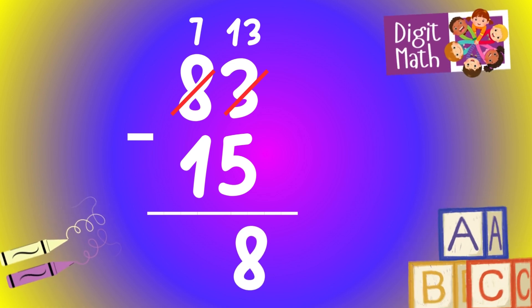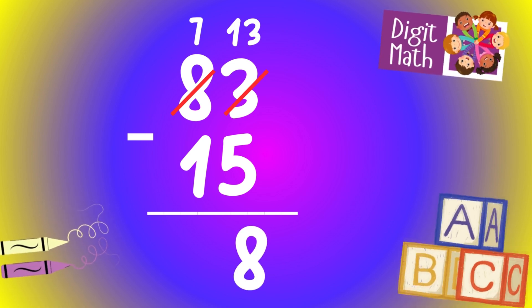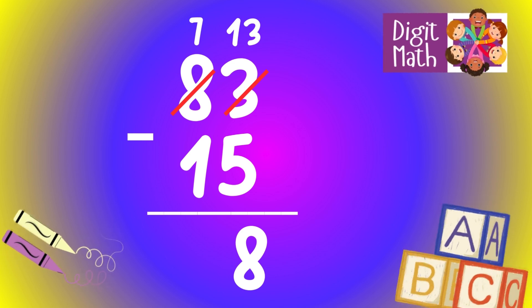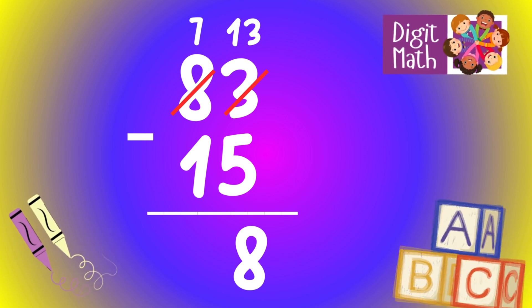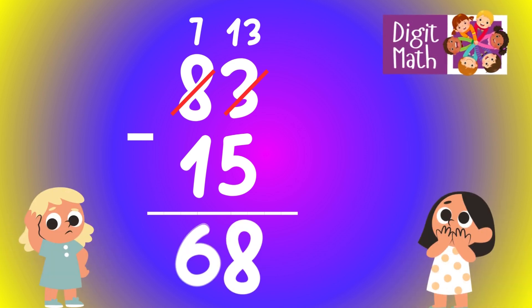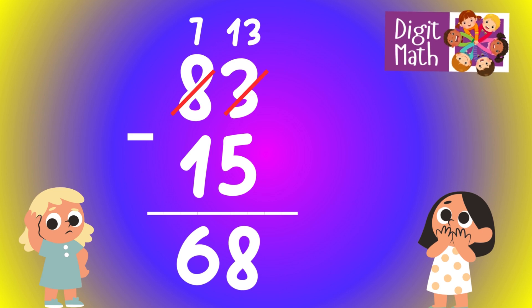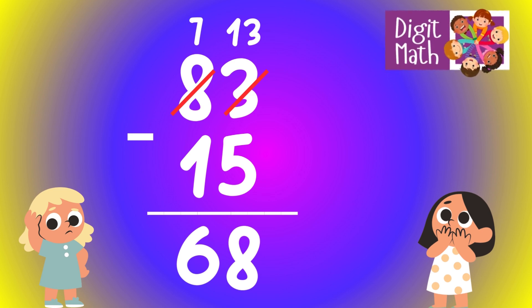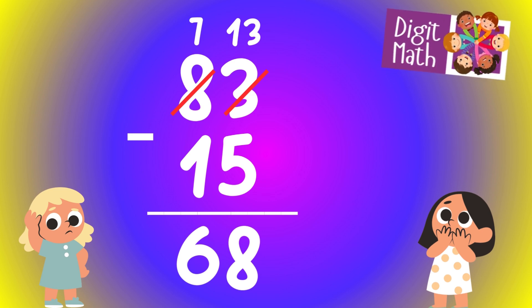In the tens column, we now have 7. Subtract 1 from 7, which equals 6. So the final result is 83 minus 15 equals 68.